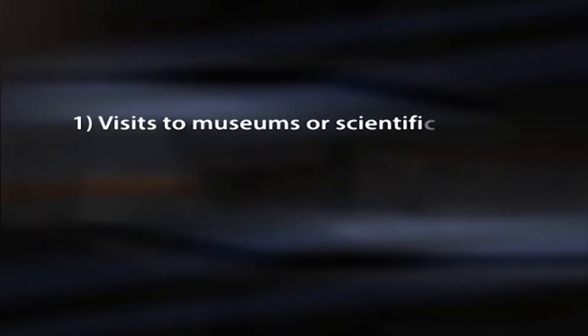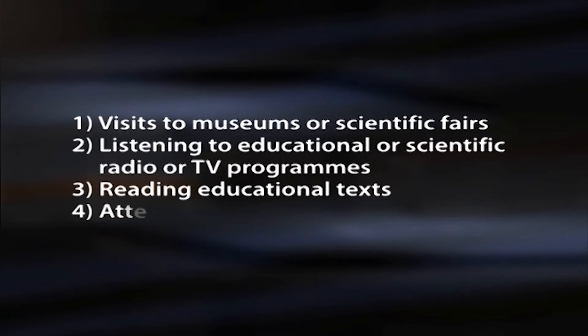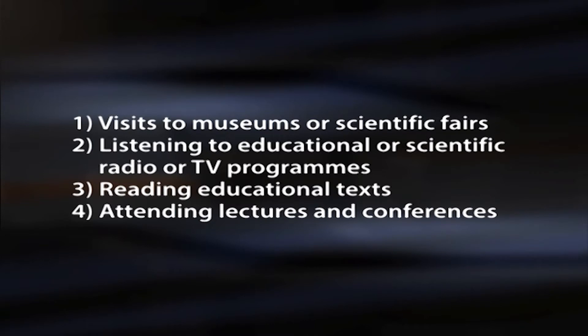Some examples of informal education include visits to museums or science fairs, listening to educational or scientific radio or TV programs, reading educational texts, and attending lectures and conferences. If these activities are made more systematized, it will be closer to non-formal education. The classification of an act of education as formal, non-formal or informal cannot be made by examining it in isolation — for example, a visit to a planetarium may be informal if arising from a personal and spontaneous decision, but can also be part of a systematic curriculum associated with more traditional forms of education.